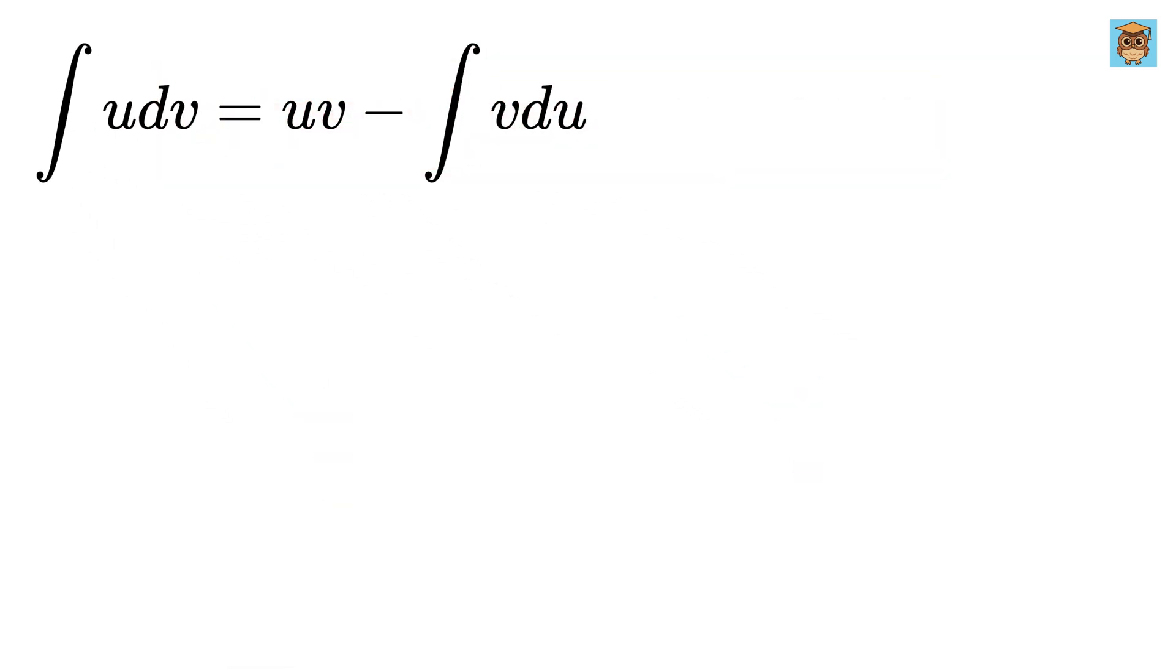As a first step, we identify which part of the function should be u and which part should be dv. To do this, we use the acronym ILATE.